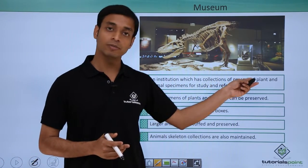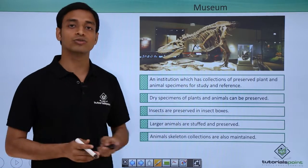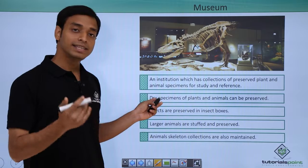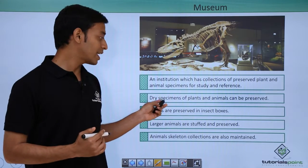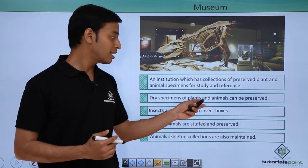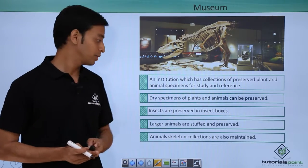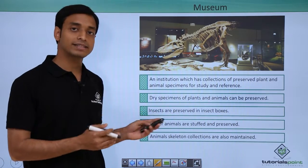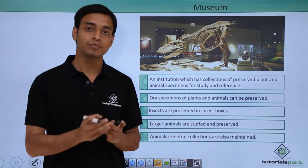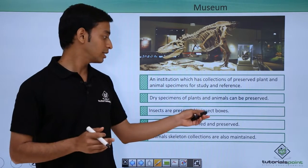Museums keep dry samples of specimens — specimens of plants and animals — and they are preserved and conserved. In the case of insects, insects are also kept in museums. They are first collected, they are killed, they are pinned, and then they are kept in specific insect boxes.